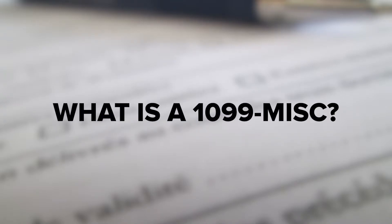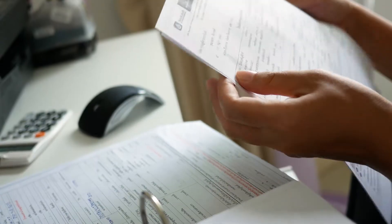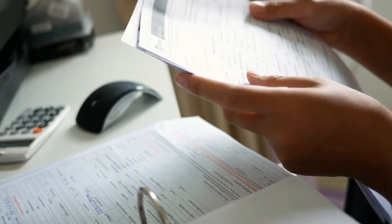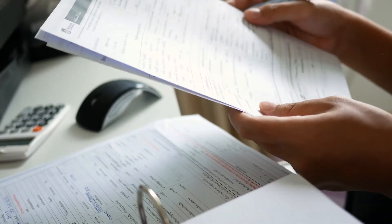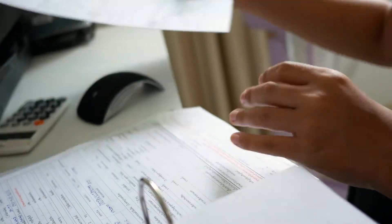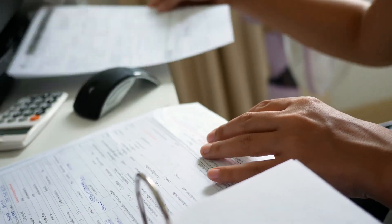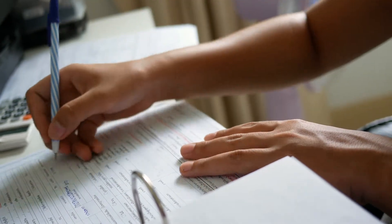What is a 1099 Miscellaneous? You submit a Form 1099 Miscellaneous to the IRS to report business payments made to a contractor. It helps the government track how much money independent businesses make. Some companies also use it as a way to track their spending.